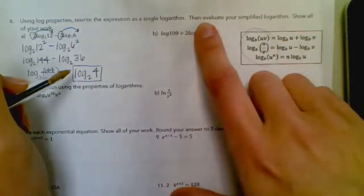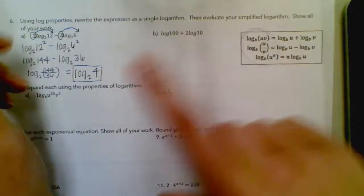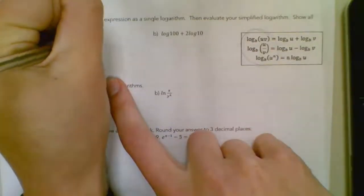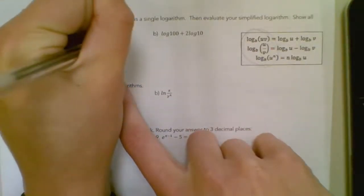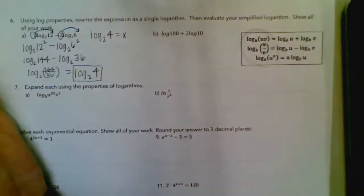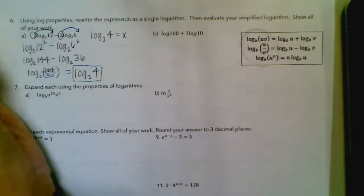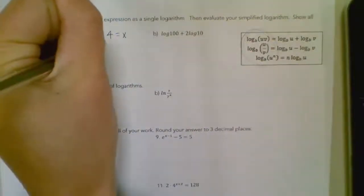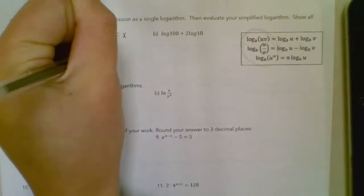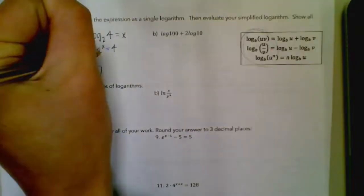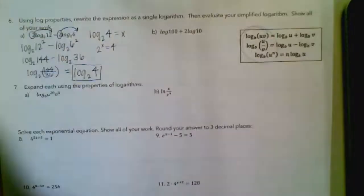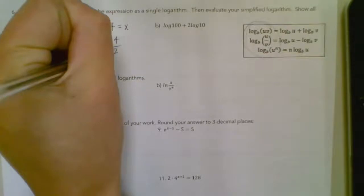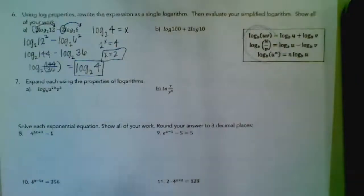Now I have a single log because I only have the word log written one time. Then it says evaluate your simplified logarithm. So I write log base 2 of 4 and set it equal to x, then rewrite in exponential form: 2 to the x power equals 4. 2 to what power gives you 4? 2 squared equals 4, so x equals 2.